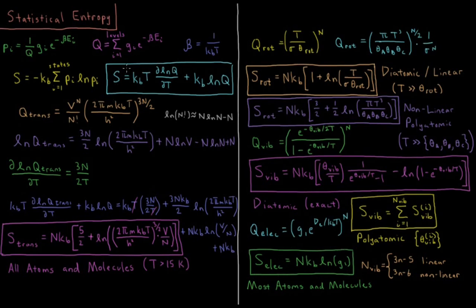The total entropy of a molecule is the sum of these contributions: the greatest contribution comes from translations, then a significant contribution from rotations, and usually a very small contribution from vibrations. Any electronic contribution is independent of temperature and depends only on the ground-state multiplicity of the molecule being a singlet or some non-one multiplicity.